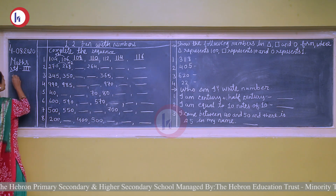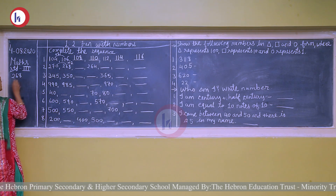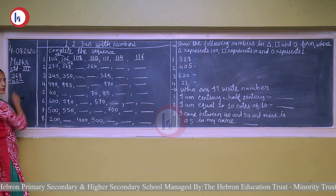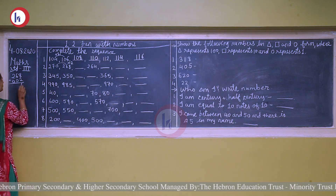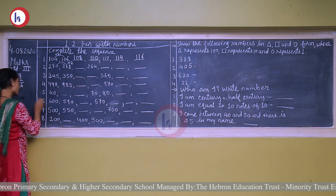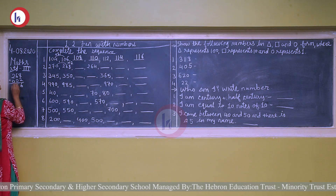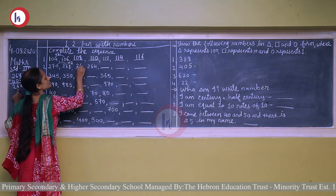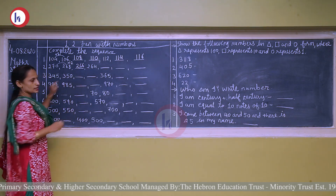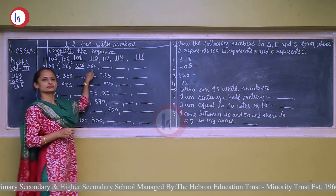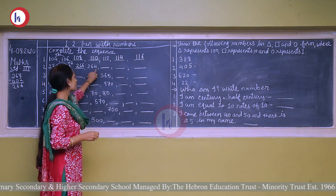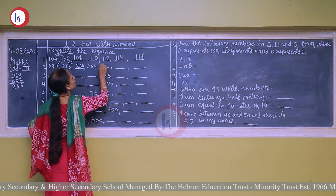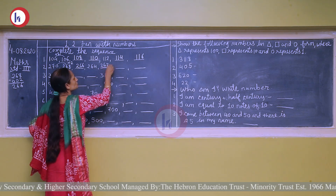If you are not sure, you can do it like this: 268 minus 2. 8 minus 2 is 6, 6 minus 0 is 6, and 2 minus 0 is 2. So our next number is 266. Then again minus 2 gives 264. Again subtract 2 gives 262.